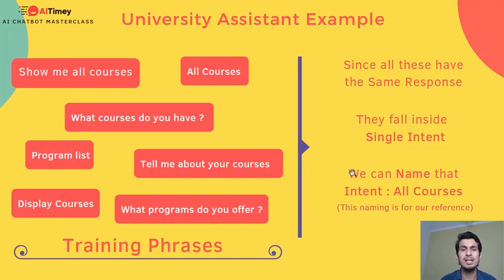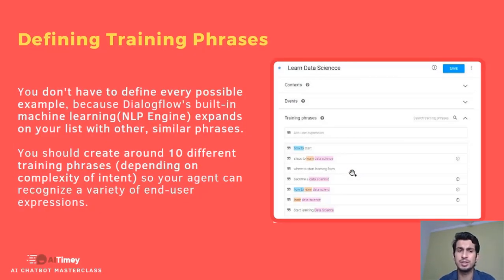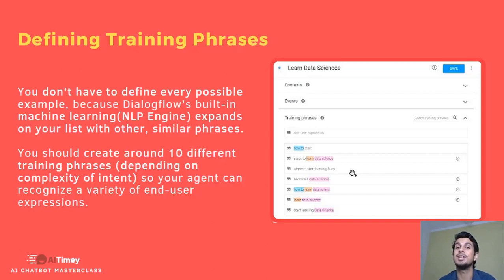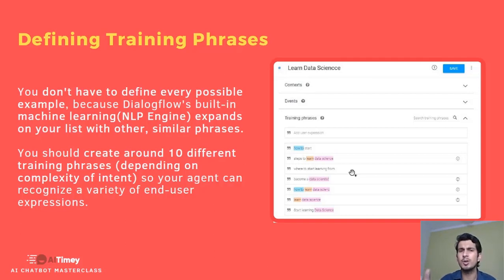When defining training phrases, you don't need to put in every small variation. In the last example, 'show me courses,' 'show me all courses,' 'show courses' — you could just have one of these. Dialogflow is an NLP engine; it recognizes patterns, queries, and keywords, and it synthesizes the training phrases to match your query. You don't need to put in all those small variations.